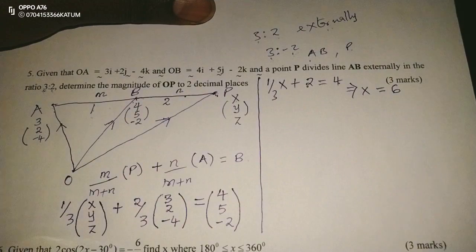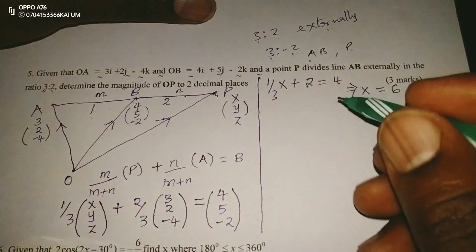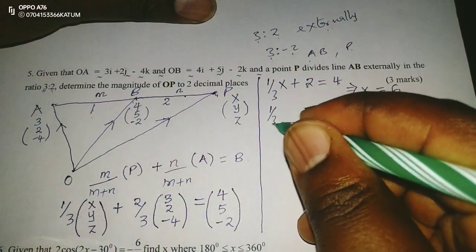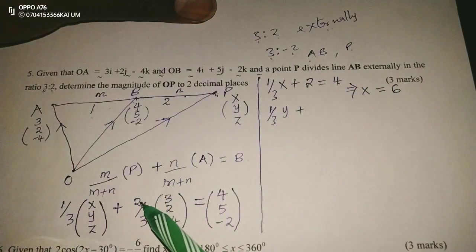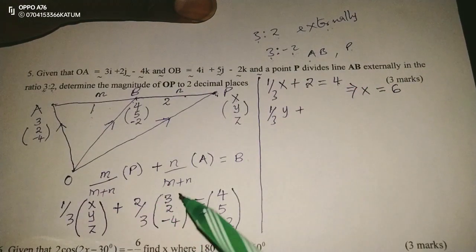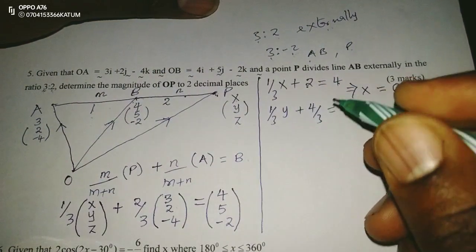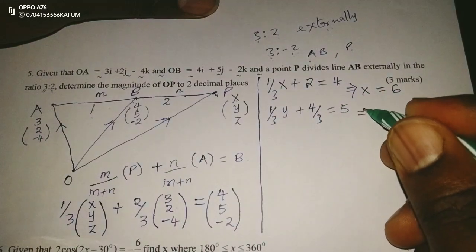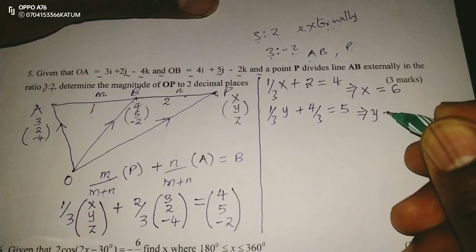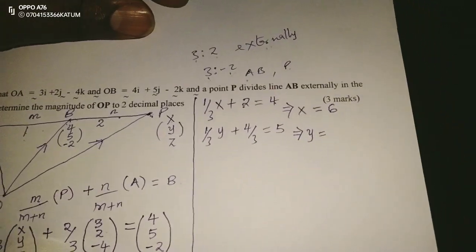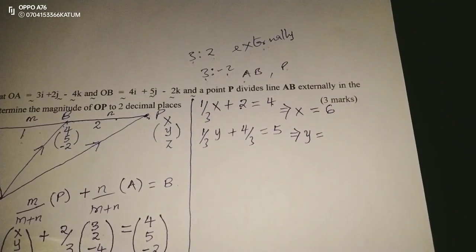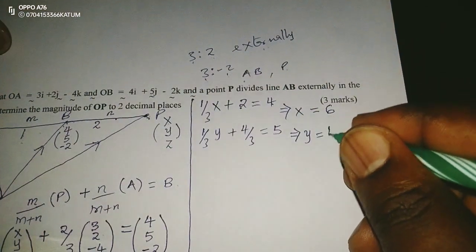The next is, when we take, a third Y plus, when we take, two thirds times two, this becomes four out of three, equals to five. So for us to get the value of Y, it means we will love to take, let me use my calculator now, five minus four out of three. Then now we multiply by three, to remain with Y. And this becomes exactly 11.